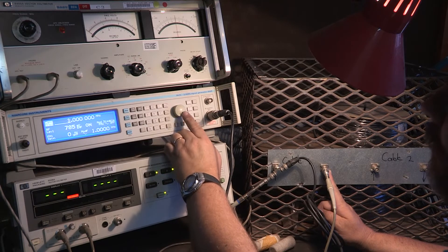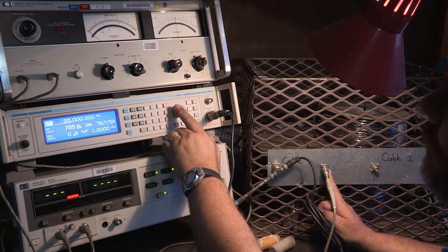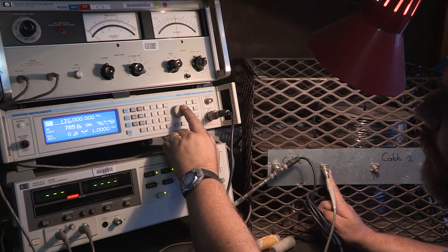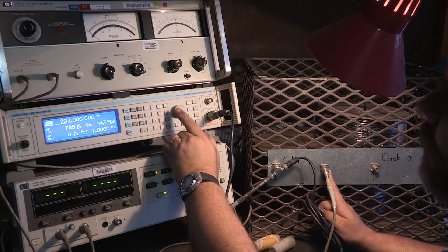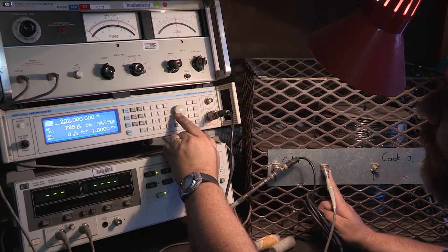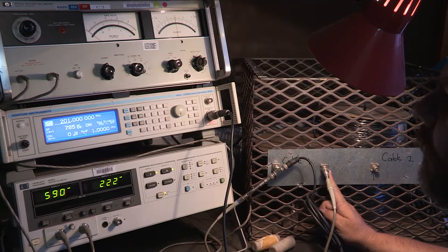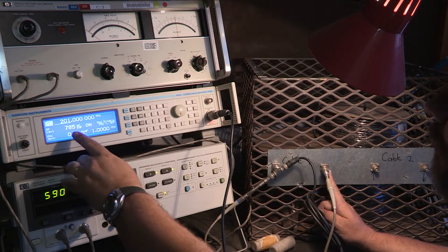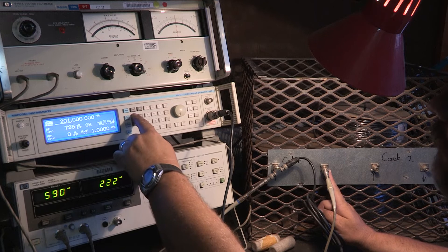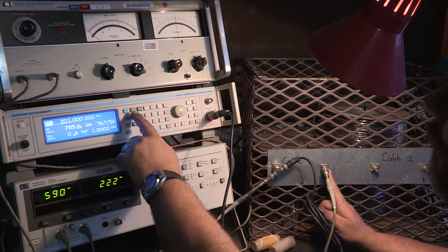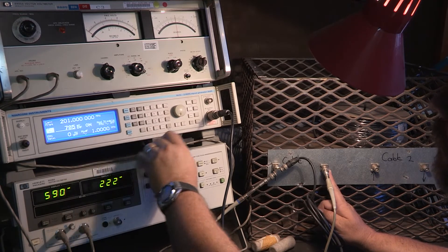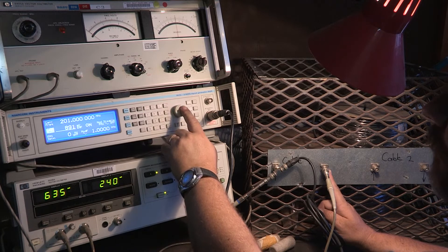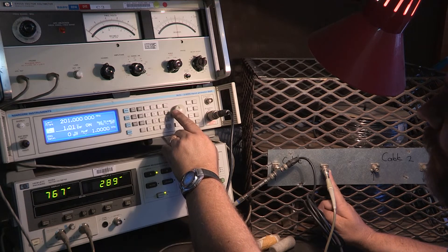If I go back and change my carrier frequency, you'll notice the instrument on the vector voltmeter is adjusting. Just for demonstration purpose right now, if I choose a frequency like 200 megahertz, I need to adjust the RF level so that we can get back to 730 millivolts.